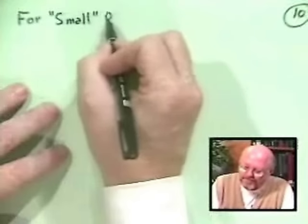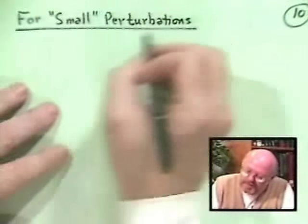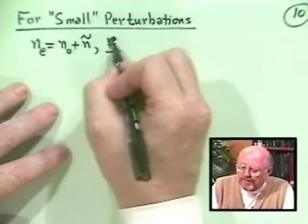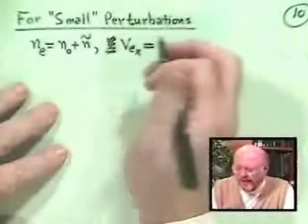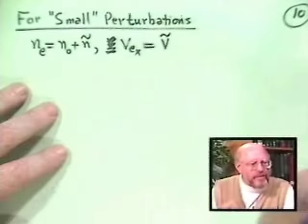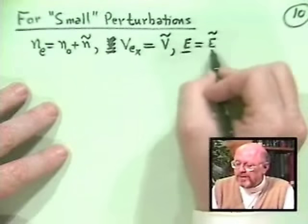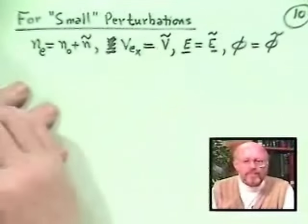So for our perturbation scheme, for small perturbations, what we're going to say is N sub E is going to go to N0 plus N tilde. VEX is going to go to equilibrium flow, which we said we won't bother with, and then we'll have a V tilde, so it's only a perturbation from the equilibrium of nothing. The electric field is likewise going to be just a perturbation, and the potential is likewise going to be just the perturbation. There's a constant, but we won't worry about the constant.